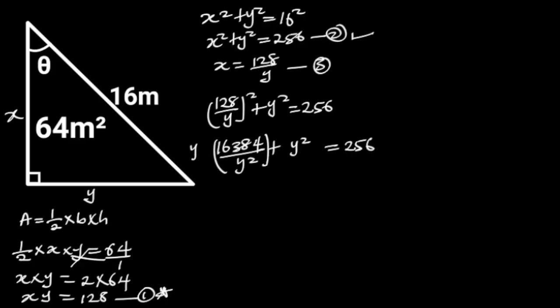Next, let's clear the fraction by multiplying through by y squared. y squared will cancel y squared, and we are left with 16384 plus y power 4 is equal to 256 y squared.